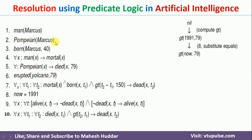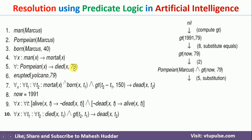We can use the second logical statement: pompeian(marcus). Since marcus is a pompeian, and the fifth statement says if x is a pompeian then x died in 79, we get died(marcus, 79). So we can write died(marcus, 79). Here we also have 79 and t1, so 79 is replaced with t1, giving us died(marcus, t1).